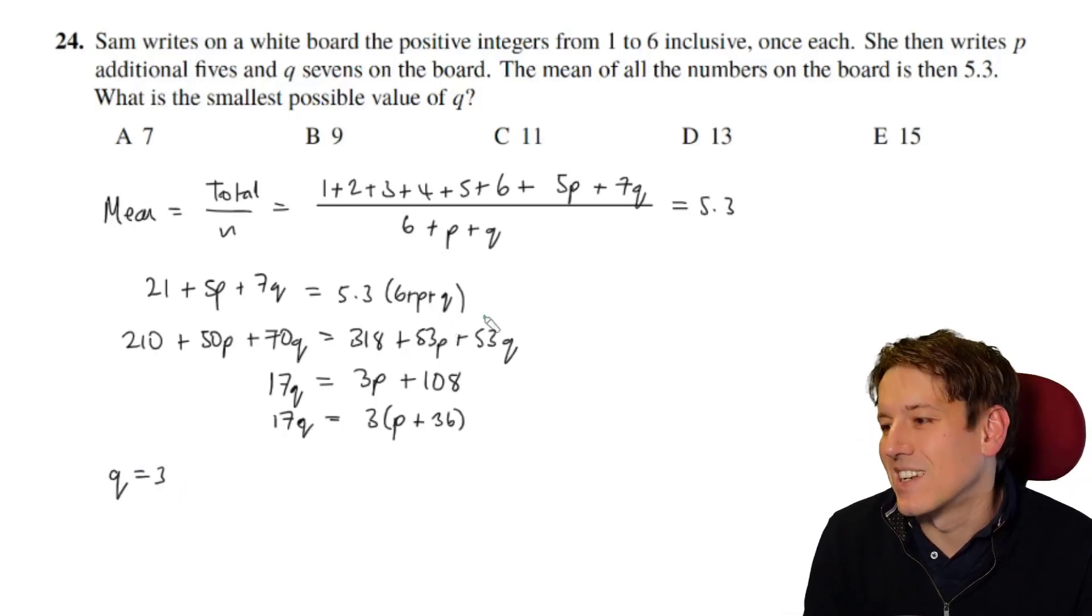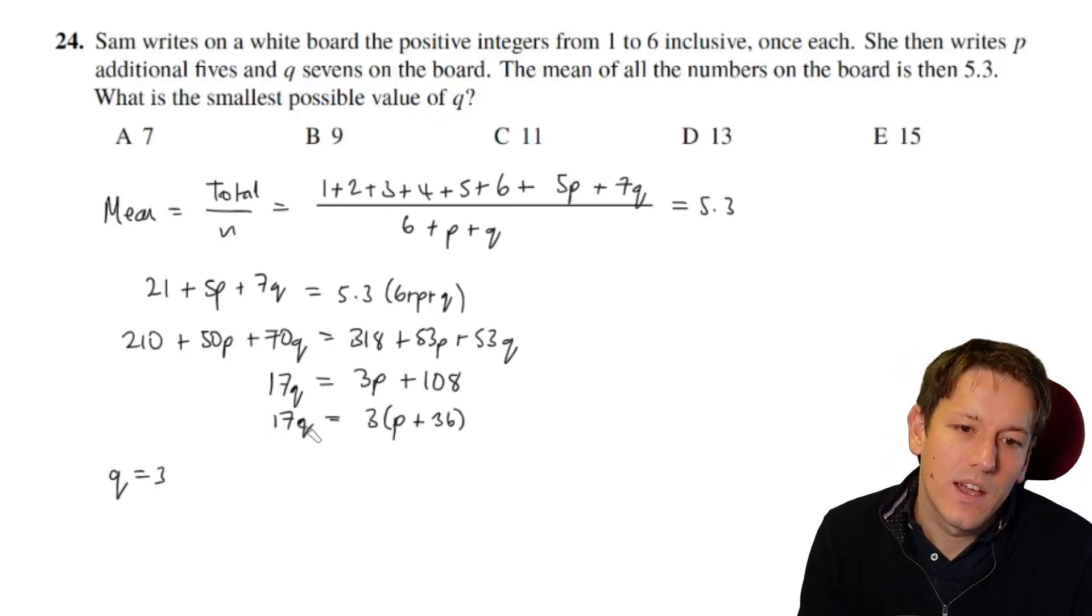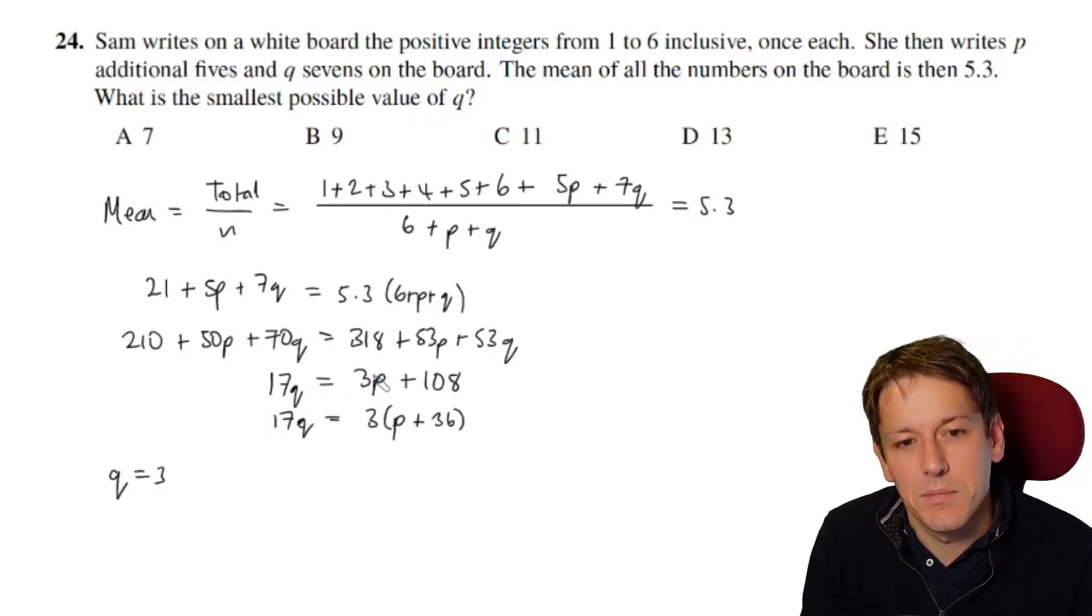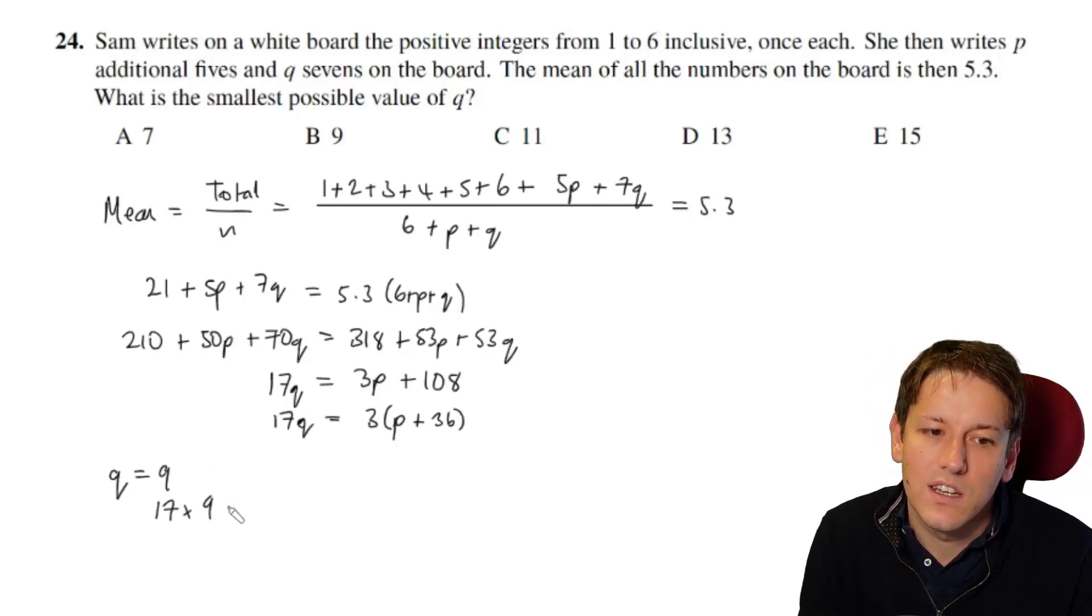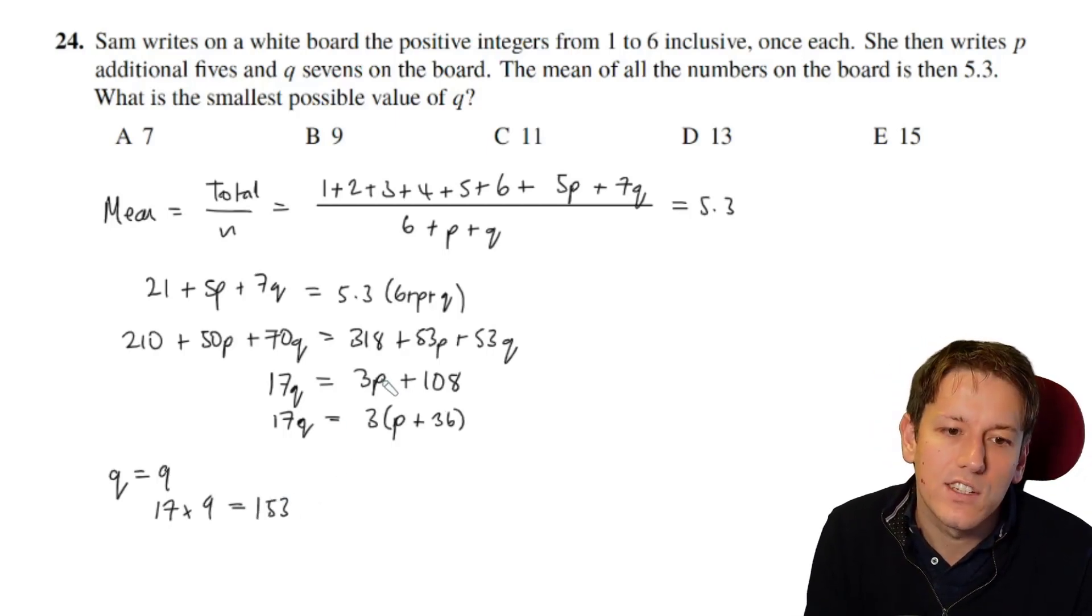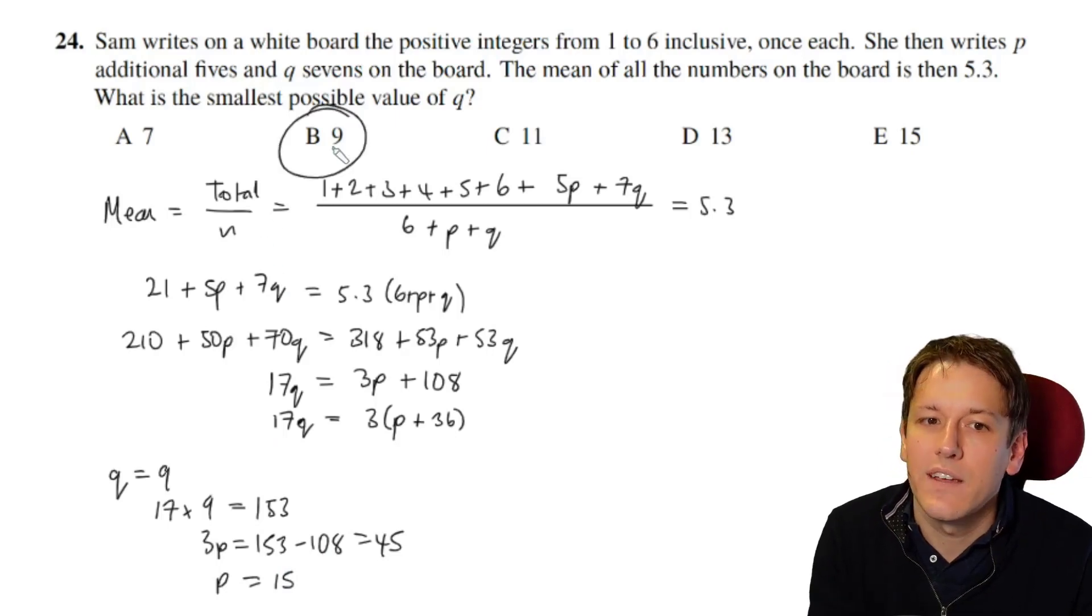Now if I took q equals 3, well actually you could just ignore that because there's no option for that in the question. But if you took q equals 3, actually this number wouldn't be big enough. p would have to be negative then because 17 times 3 is only 51. So to make this work it would have to be negative. So the first one that works is q is equal to 9. If I do 17 times 9 for 17q, that gives me 153. And actually then I could make 3p would be 153 minus 108, which is 45. So that would work with p equals 15. So we can make this work with q equals 9 and the answer is B.